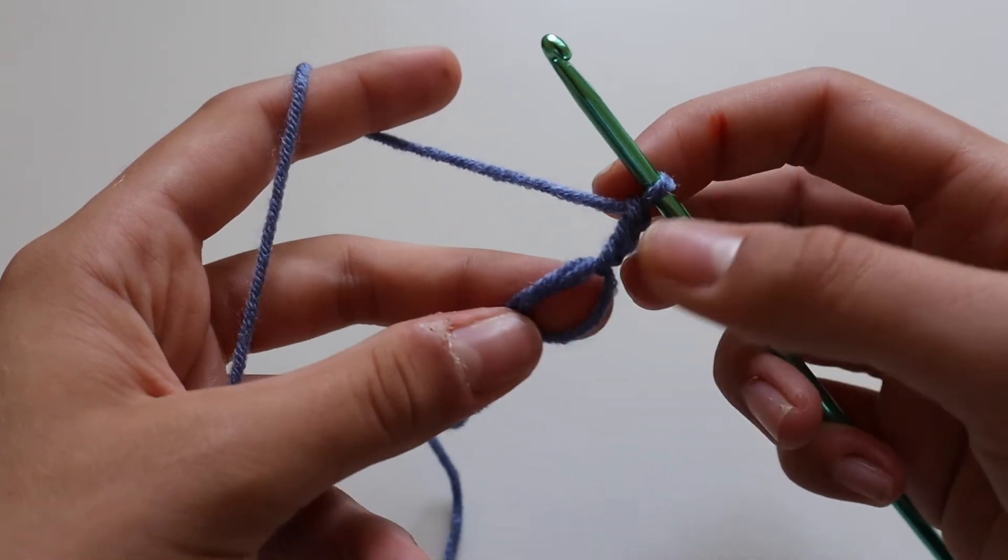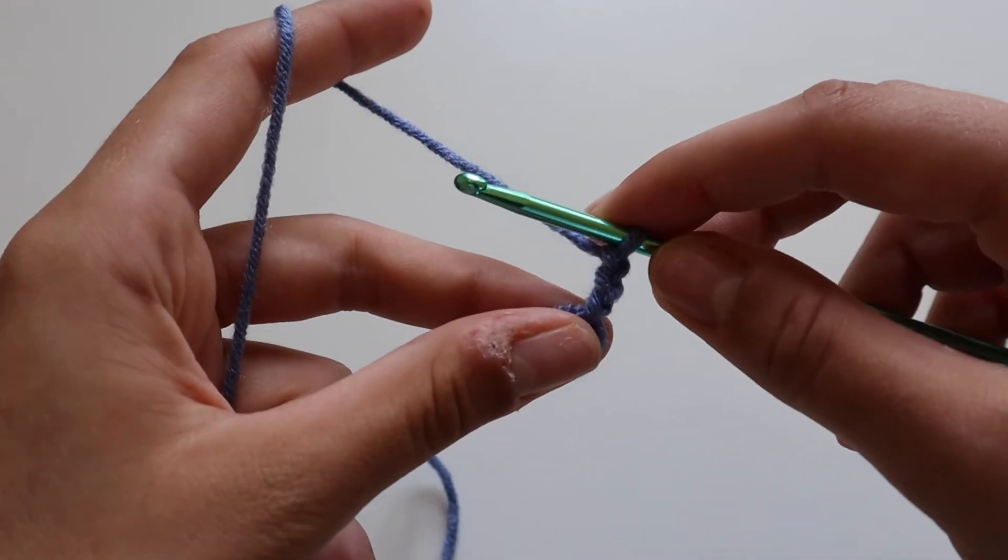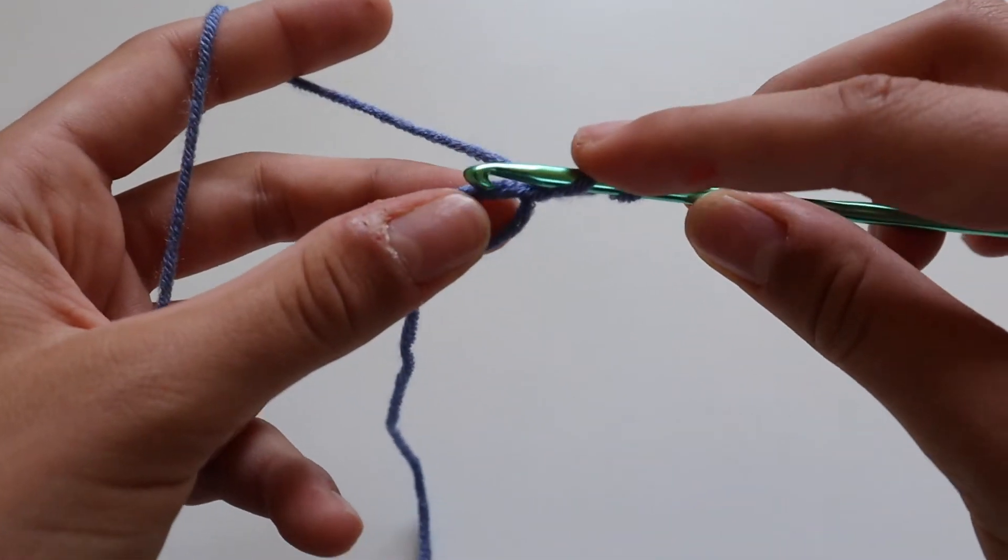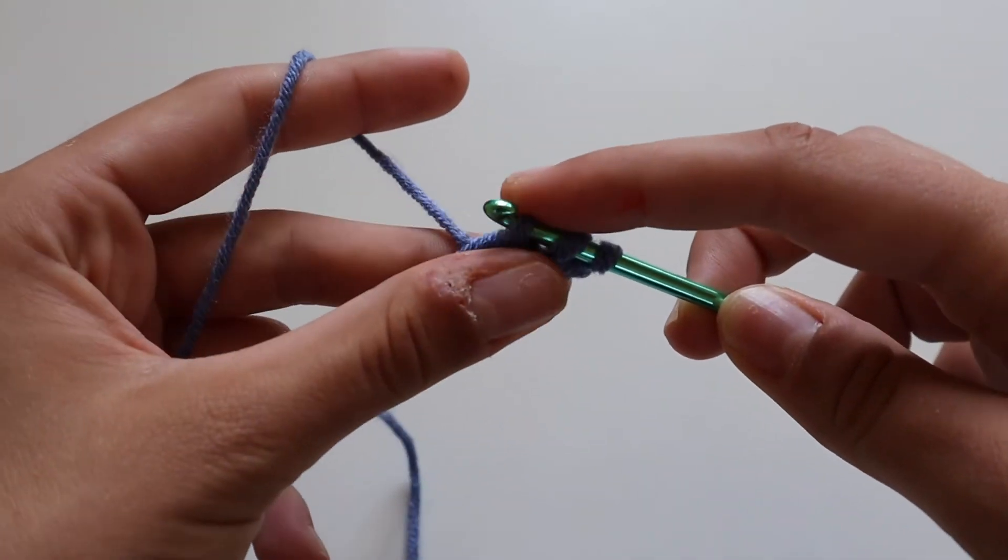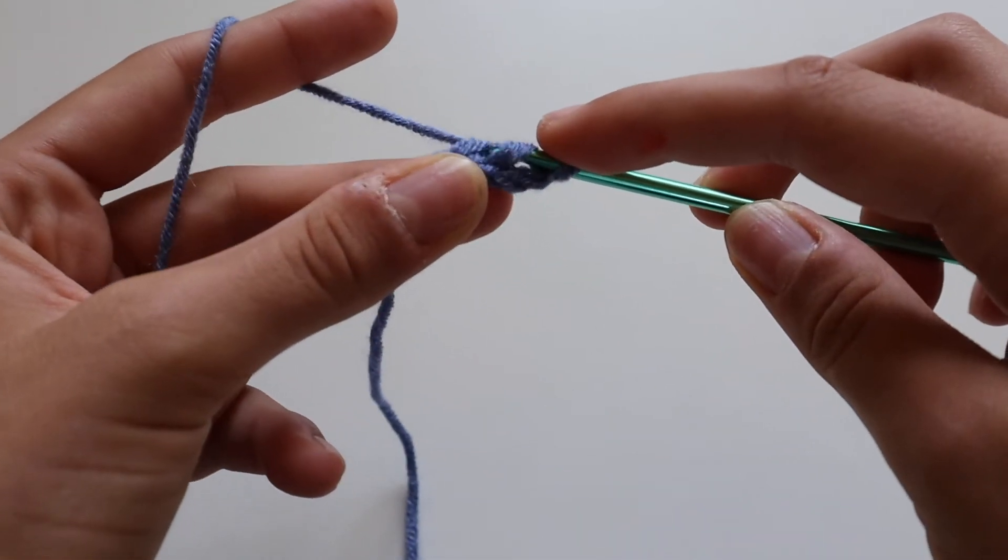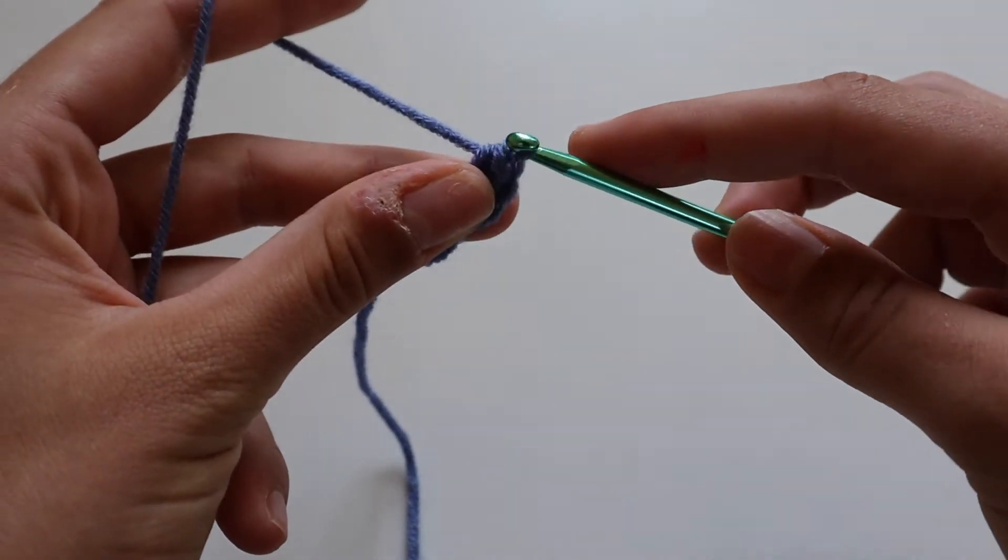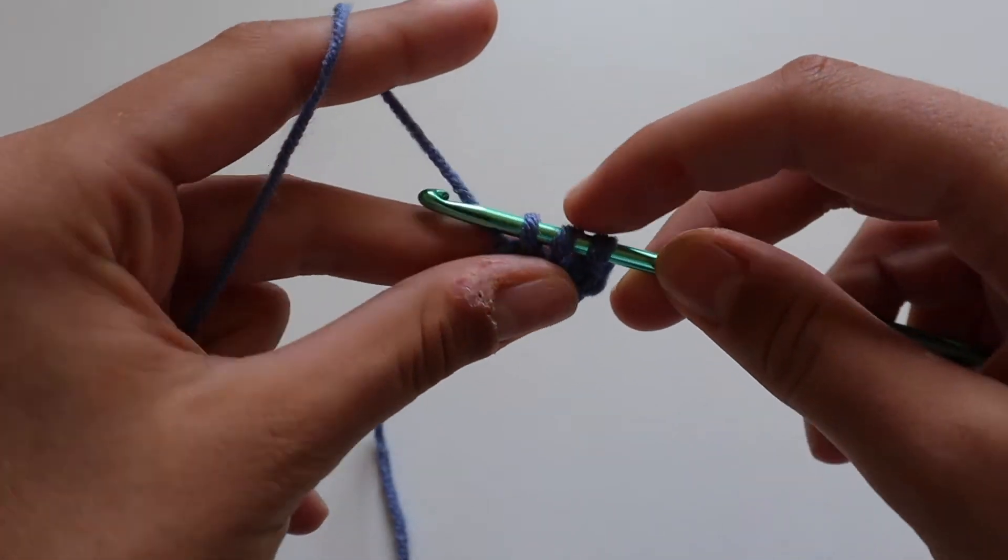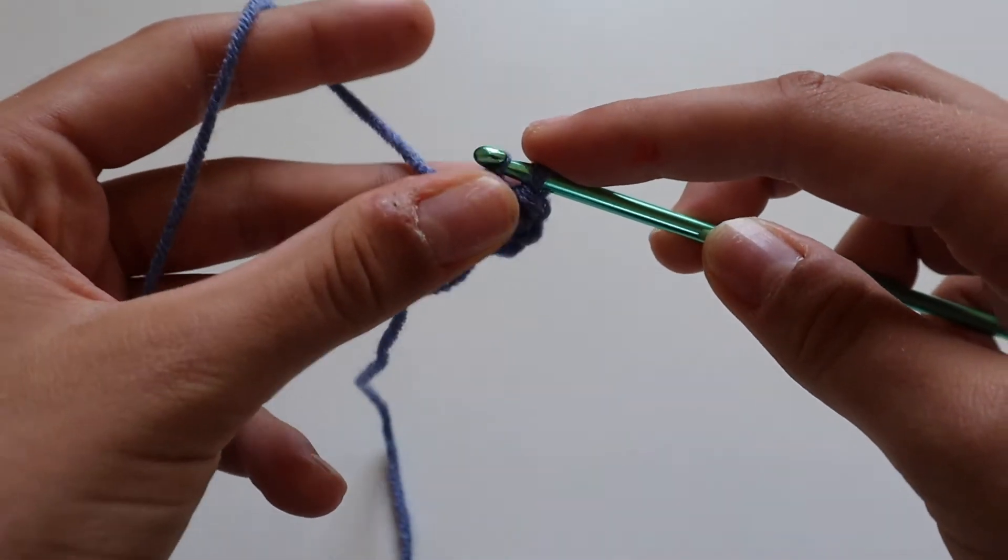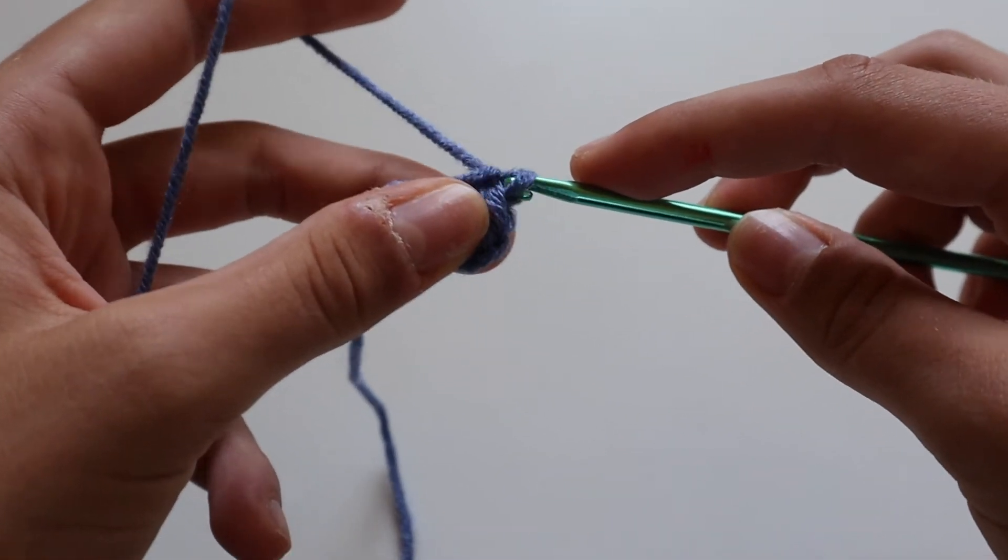And you're going to work another six treble crochets. So yarn over, insert your hook into the circle, yarn over, pull up a loop, yarn over, pull through two loops, and yarn over, pull through two loops. That's one. Yarn over, pull through two loops, and yarn over, pull through two loops. That's two.